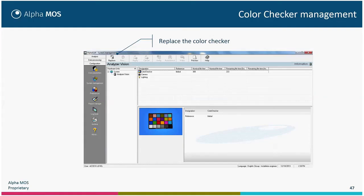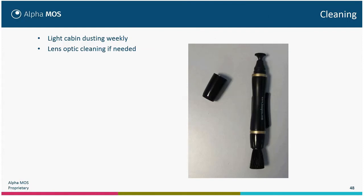Now we will talk about maintenance, which is quite simple. The color checker should be replaced every year. When you receive a new color checker, click Replace and enter the date of replacement. The light cabin should be dusted every week — you can use water and a paper towel. Never use organic solvent. If the lens optic is dirty, you should use the cleaning pen specifically designed to avoid scratches on the optics.